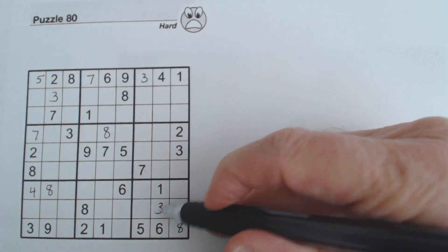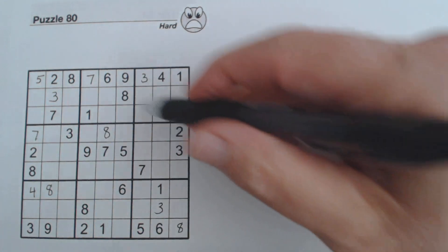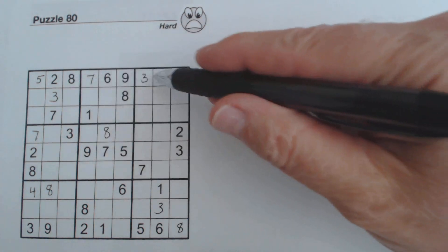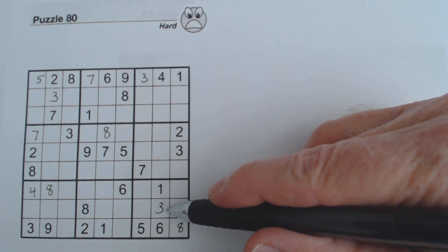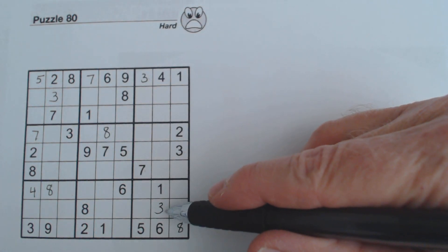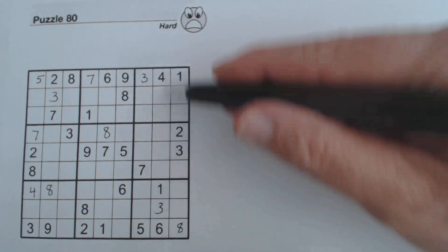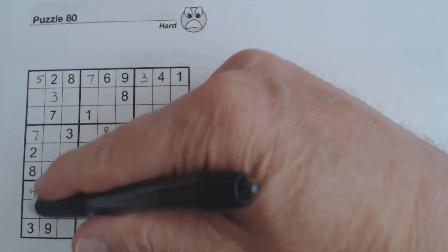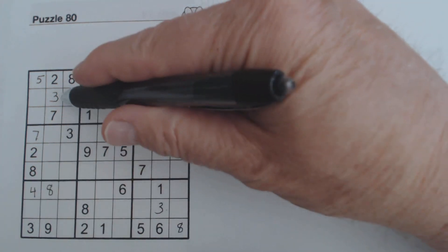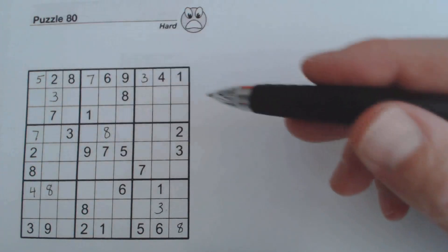We've got a 3 here, the same way we did this 3 right here. We've got 3s, so there's the only 3 left in this section, just like these 3s.